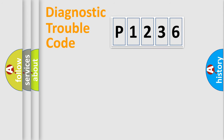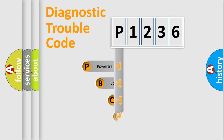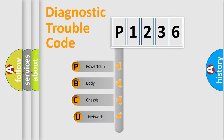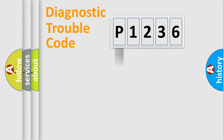First, let's look at the history of diagnostic fault code composition according to the OBD2 protocol, which is unified for all automakers since 2000. We divide the electric system of an automobile into four basic units: Powertrain, Body, Chassis, and Network.